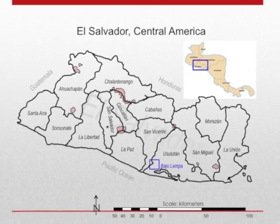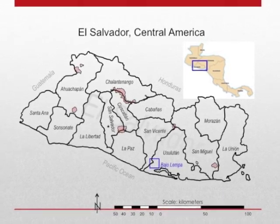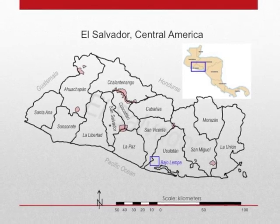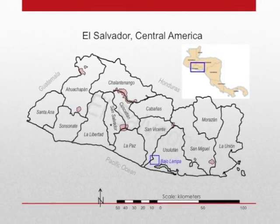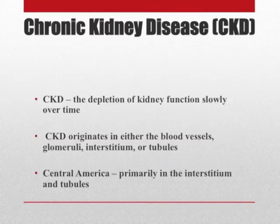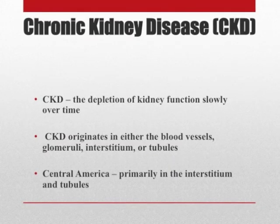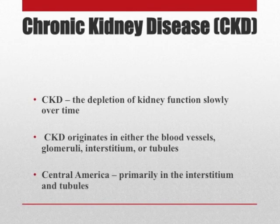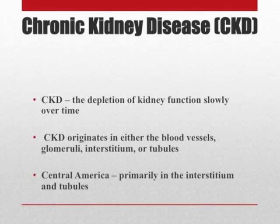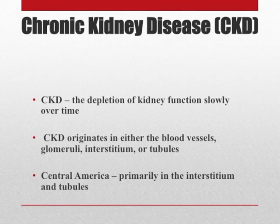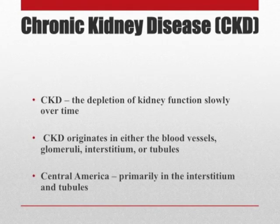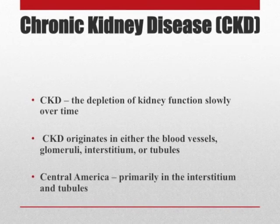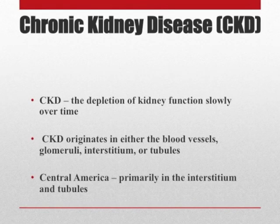El Salvador is located in Central America. It is composed of 14 departments and 262 municipalities. Chronic kidney disease consists in the depletion of kidney function slowly over time. The damage is usually in the blood vessels, glomeruli, and the interstitium and tubules. In the case of the Central American disease, the damage has been found primarily in the interstitium and tubules.